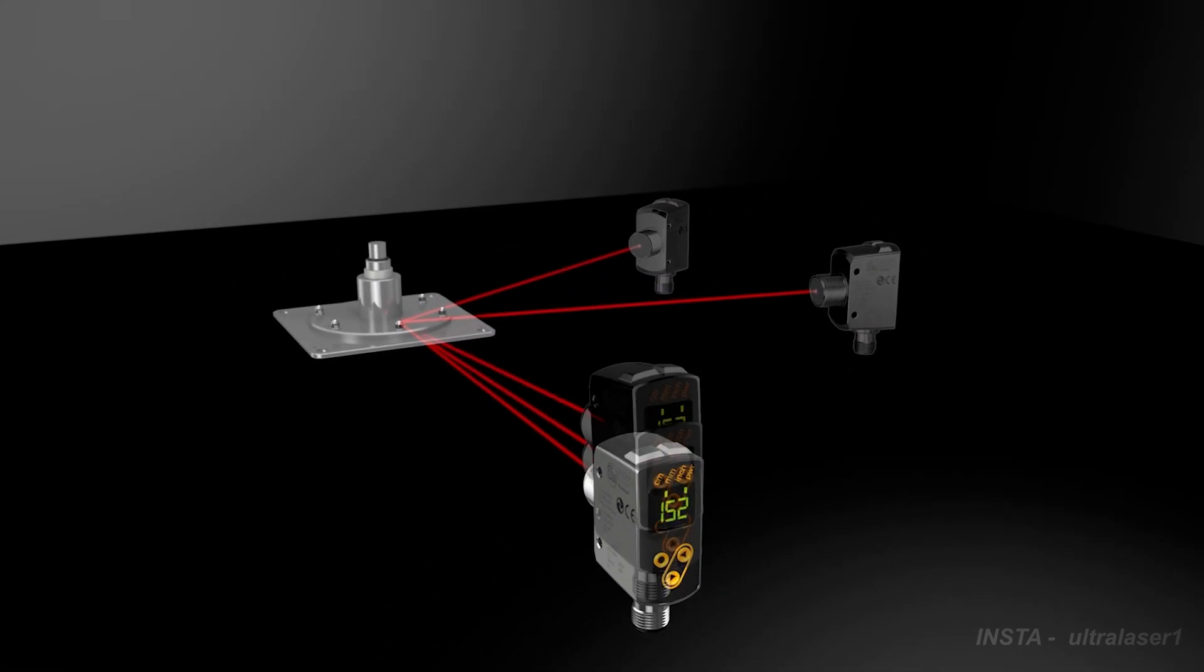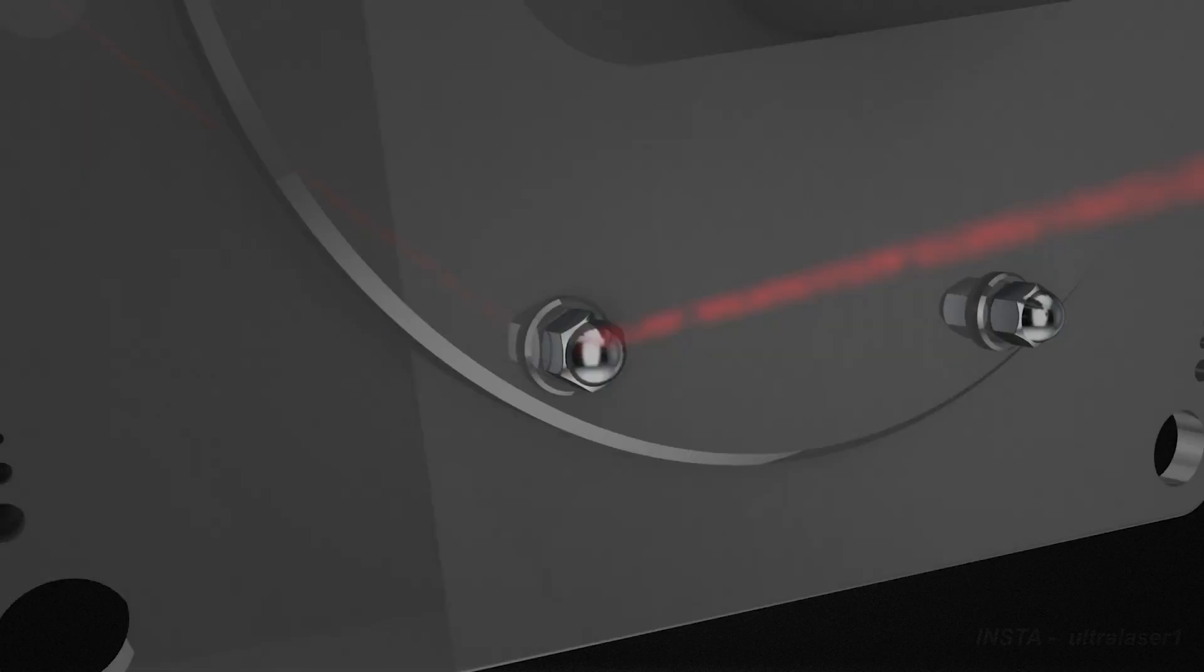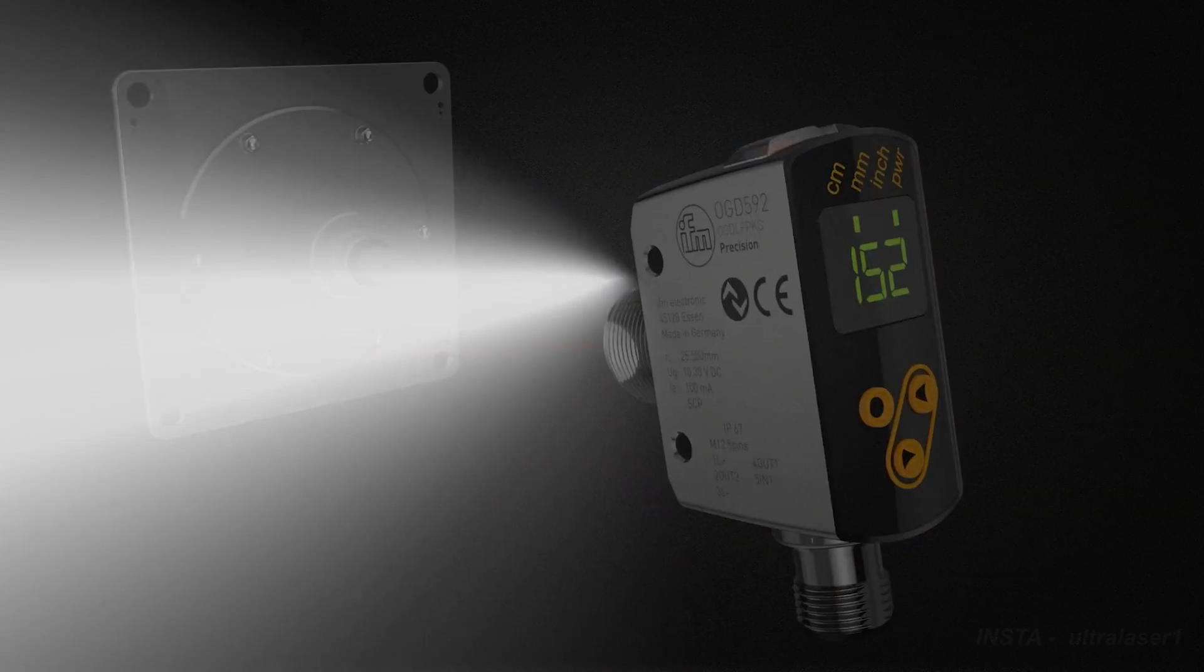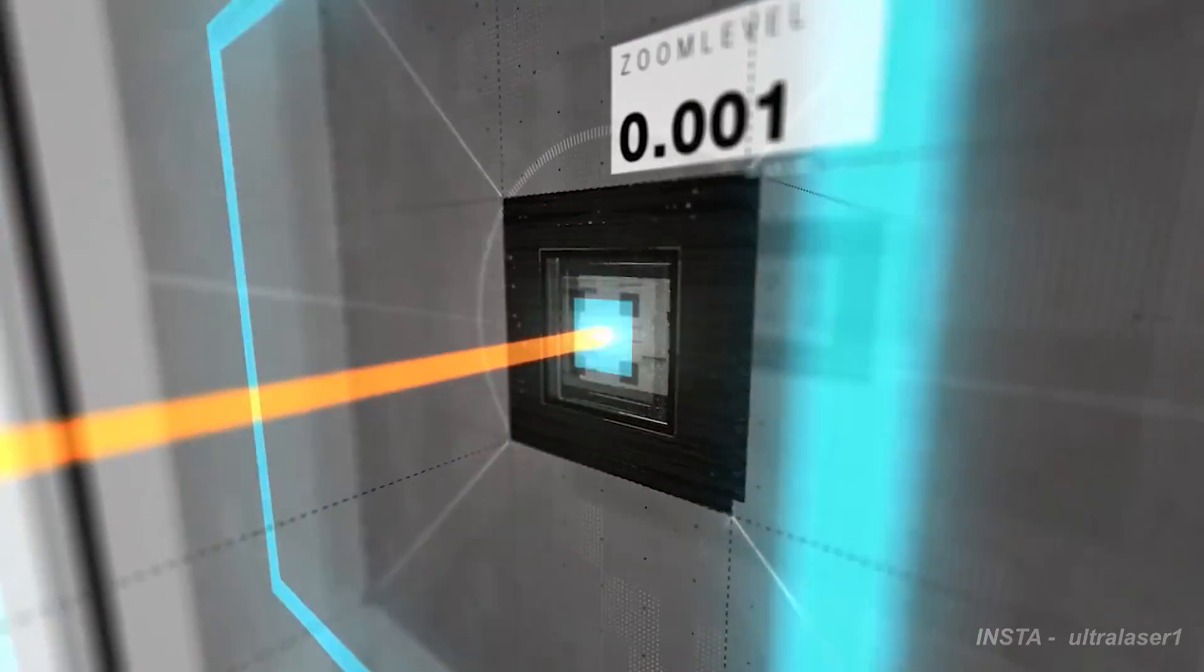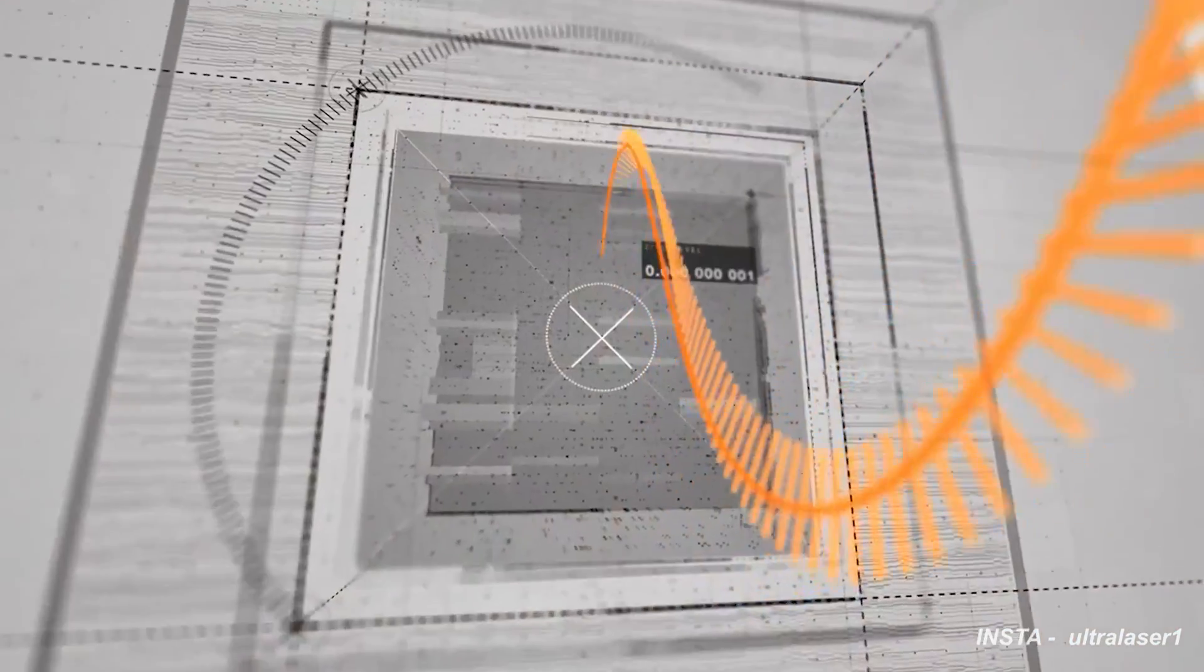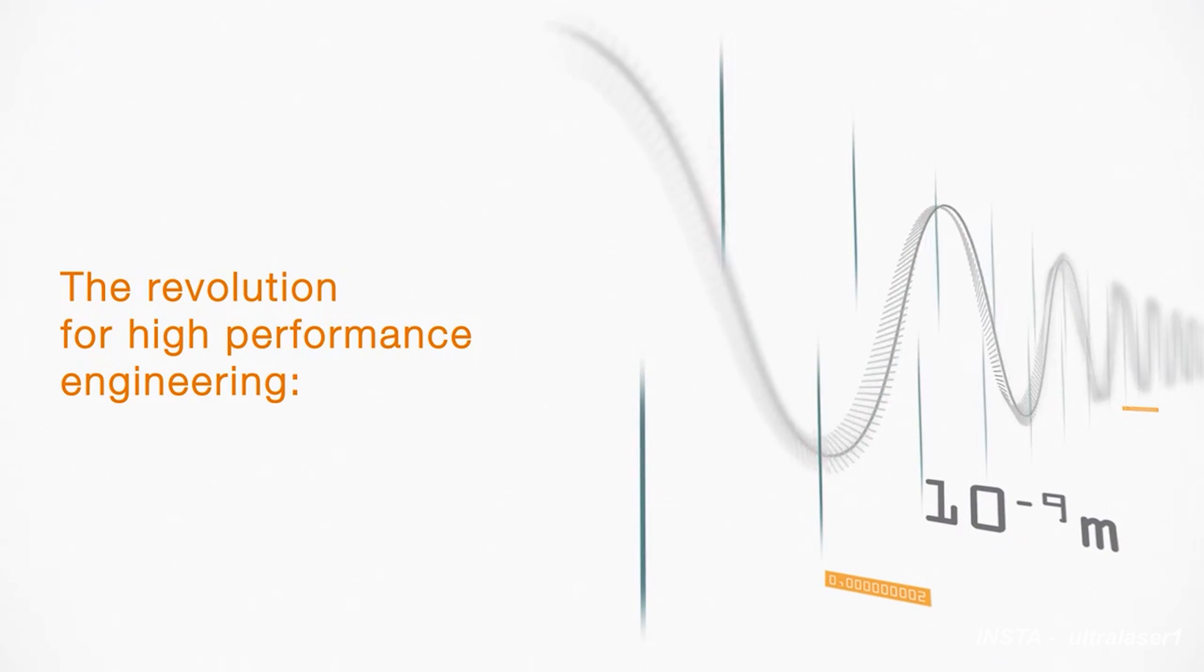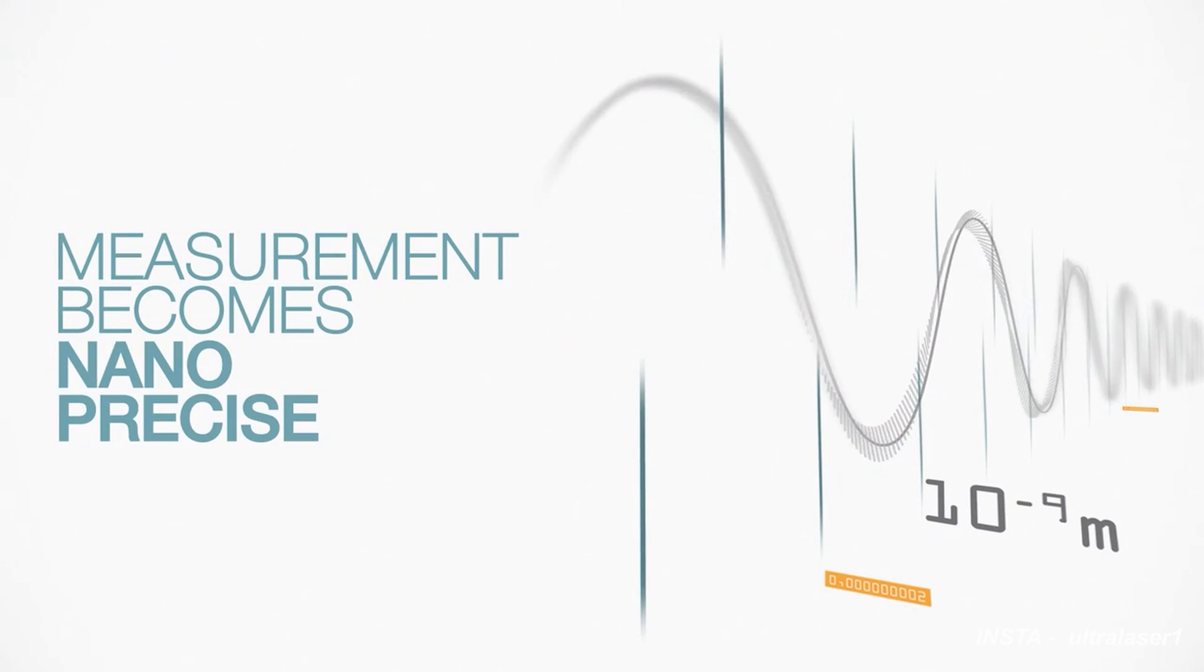In laser distance sensor, the sensor device emits the laser light at the targeted object and then pulse of the laser is reflected back by the targeted object. Distance is then calculated by using the relationship between constant speed of light in air and the time between sending and receiving of the signal.